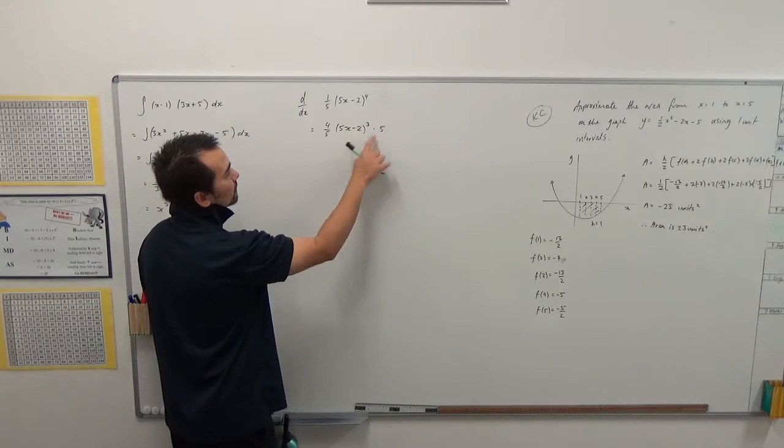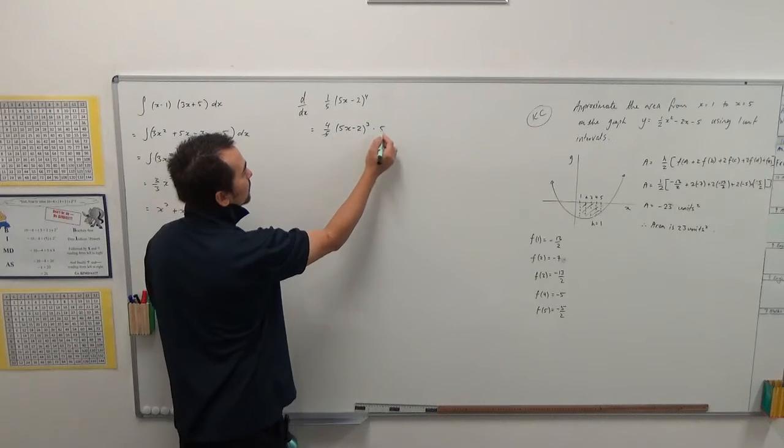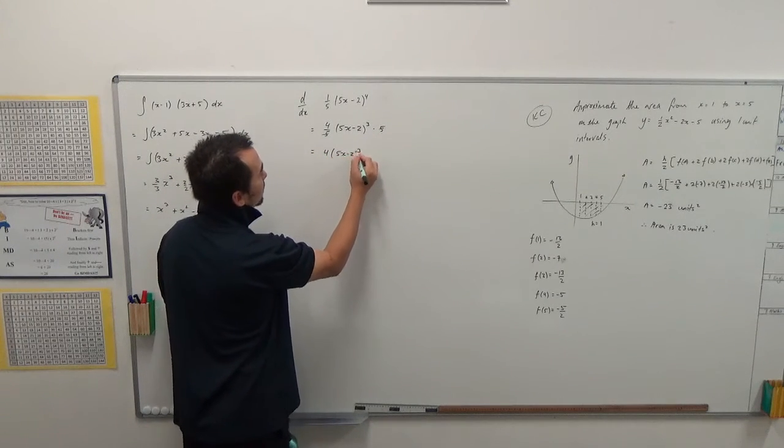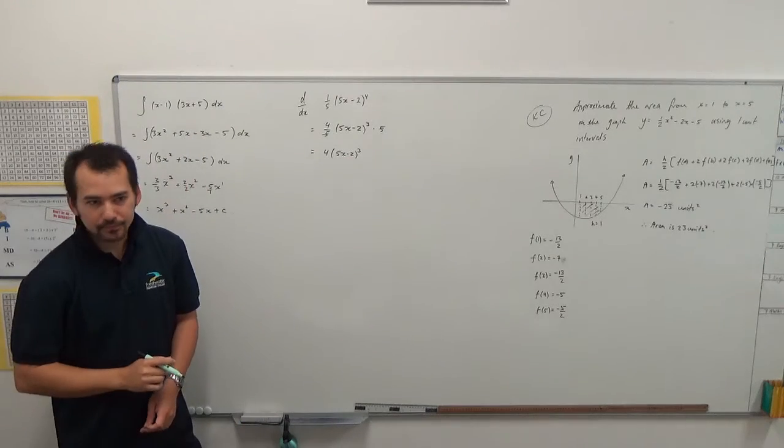What happens to the five? They cancel, right? So we're left with four times 5x minus 2 to the power of three. Okay, everyone happy with that?